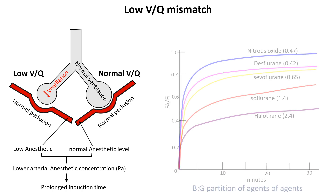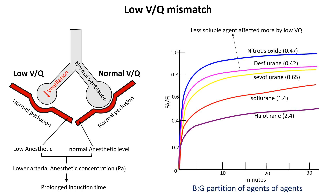Less soluble agents like desflurane are more affected by low V/Q mismatch. Because desflurane does not dissolve much in blood, its arterial partial pressure can quickly rise to match alveolar concentration when ventilation is adequate. When ventilation is poor in some lung regions, less desflurane is transferred from the alveoli into the blood. On the other hand, highly soluble anesthetics like halothane dissolve readily in the blood, so even if ventilation is reduced in certain areas, the blood still takes up the anesthetic efficiently, making arterial concentration less affected.